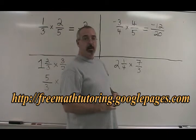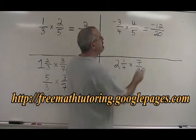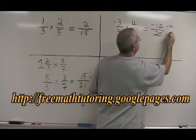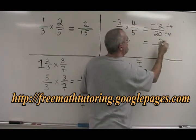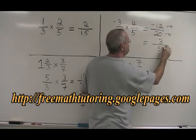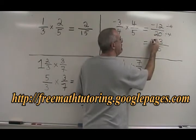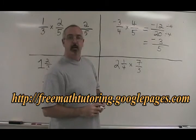But 12 and 20 have a common factor of 4, so we will divide both of them by 4. 12 divided by 4 is 3. 20 divided by 4 is 5. So we have negative 3 over 5 as our answer.